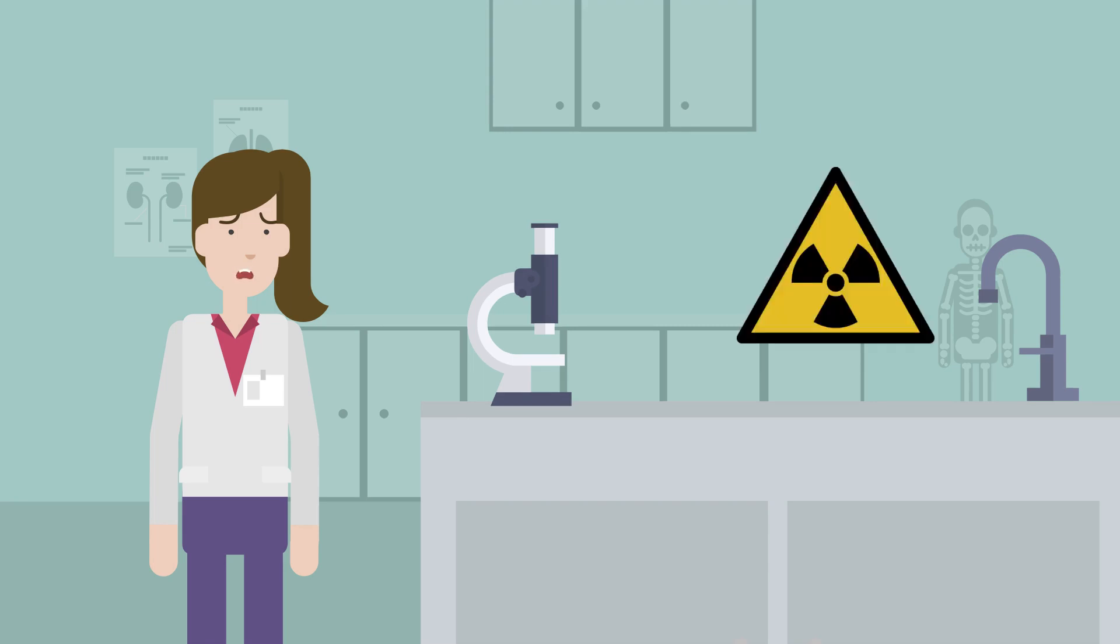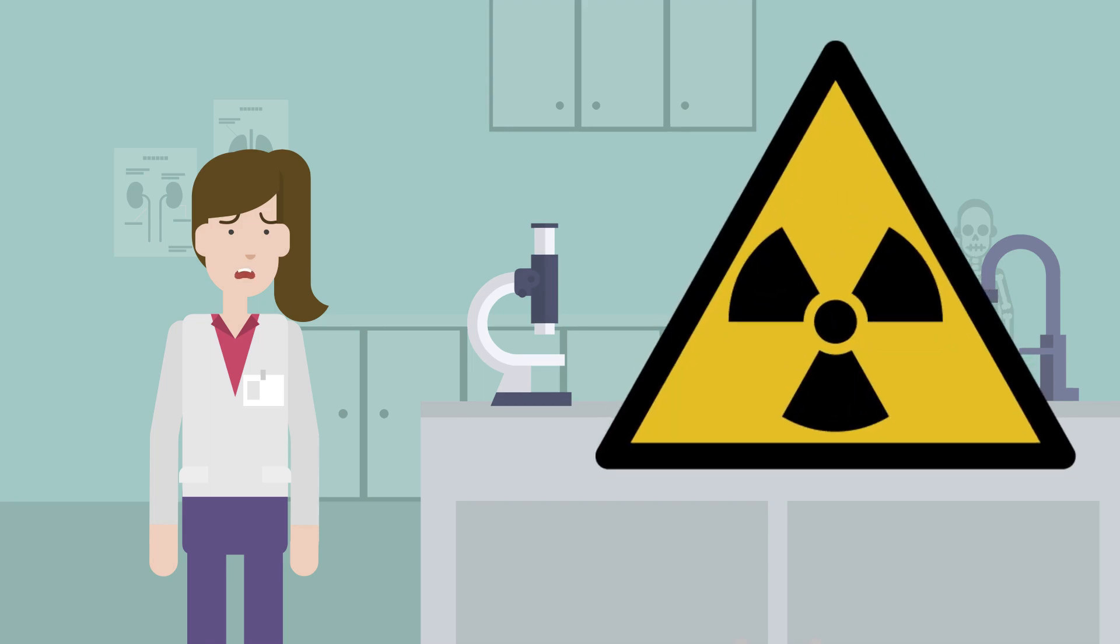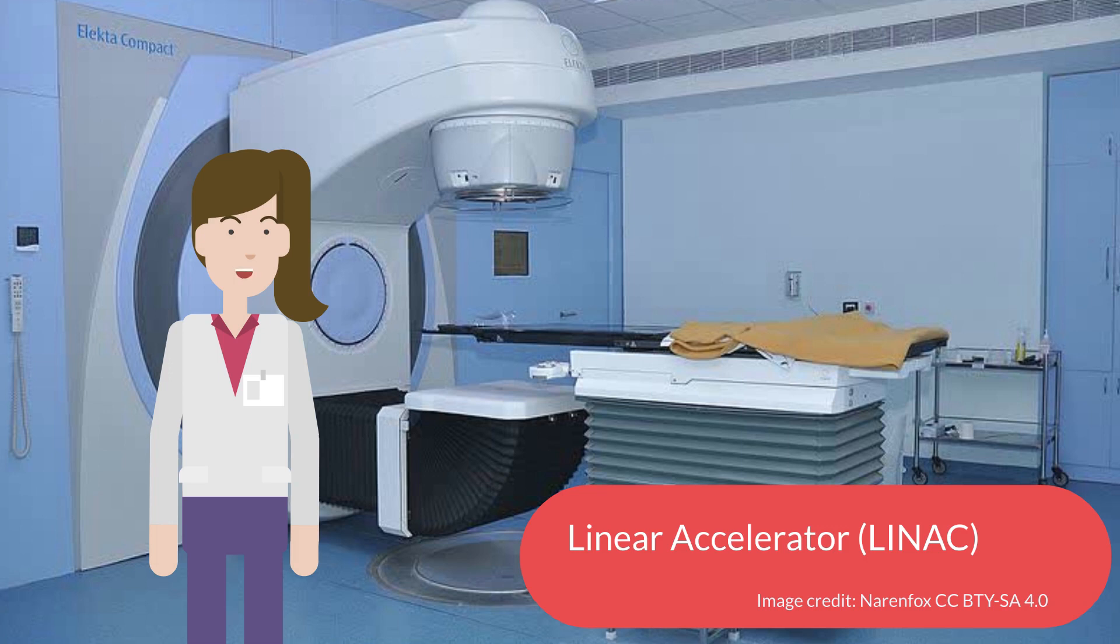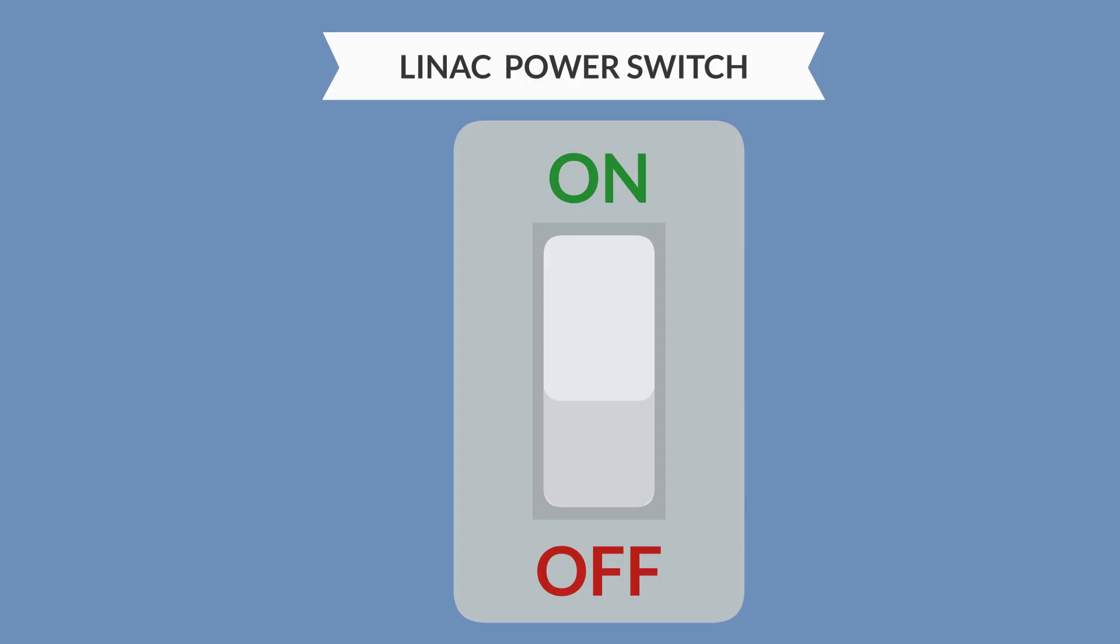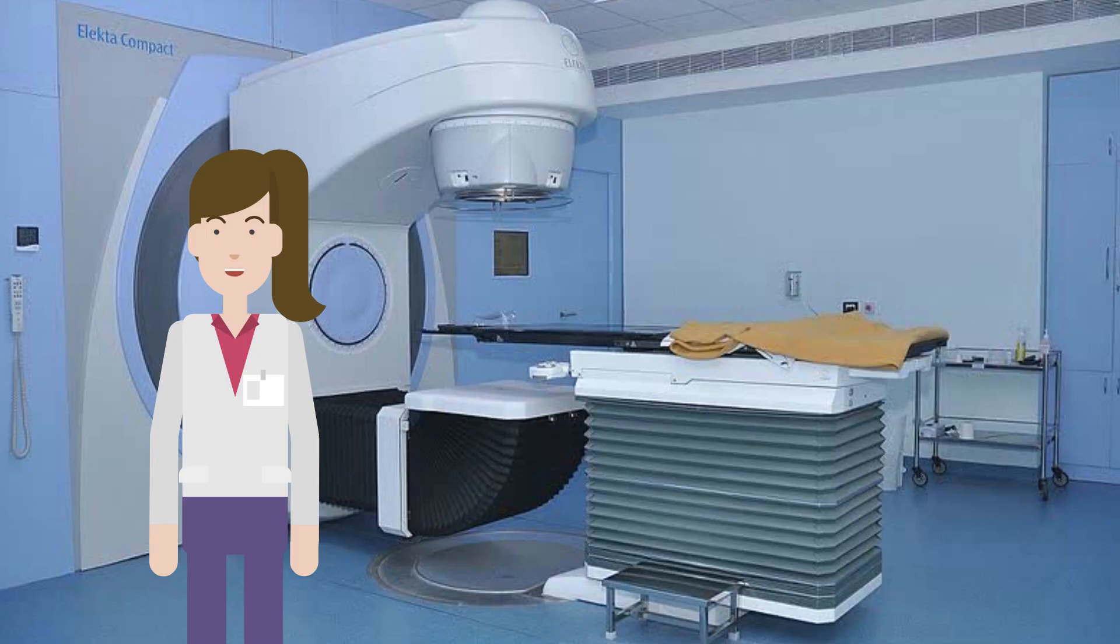All this talk of x-rays causing damage might sound scary given the history of other types of radiation, for example, Chernobyl and Fukushima. But our x-rays are generated by a machine called a linear accelerator, or a LINAC for short. The LINAC is the machine that generates the photons. If we turn off the power, the machine stops and the x-rays stop.